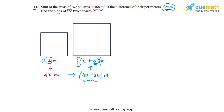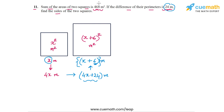Now that we have the side lengths in terms of x, we can write the areas in terms of x. The area of the smaller square will be x squared square meters, and the area of the larger square will be (x plus 6) whole squared square meters. We can take the sum of these two expressions and set it equal to 468 square meters.